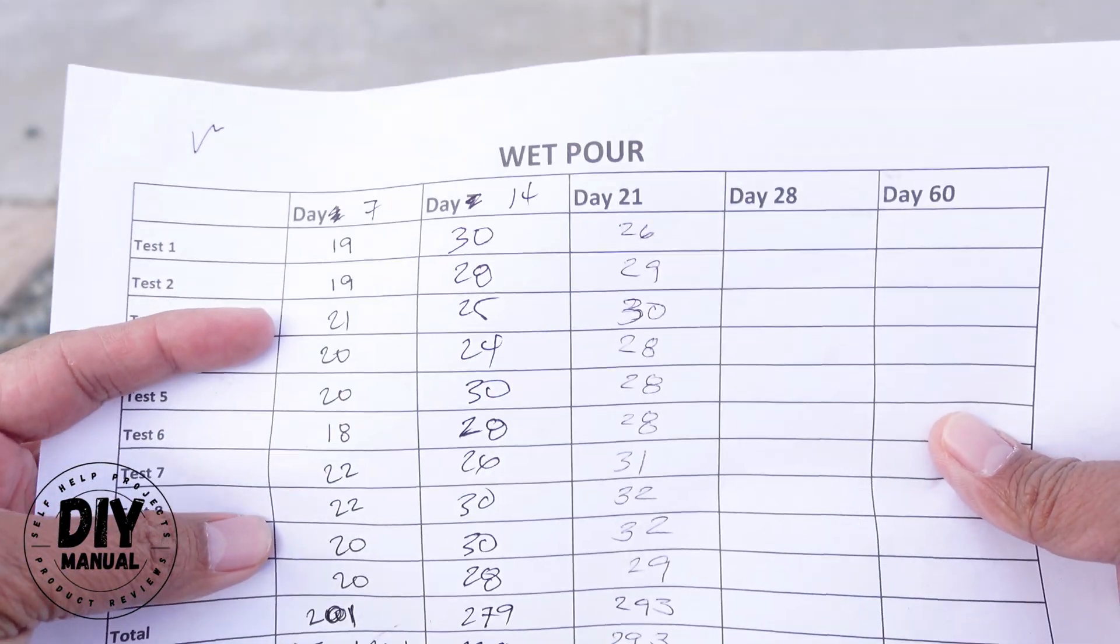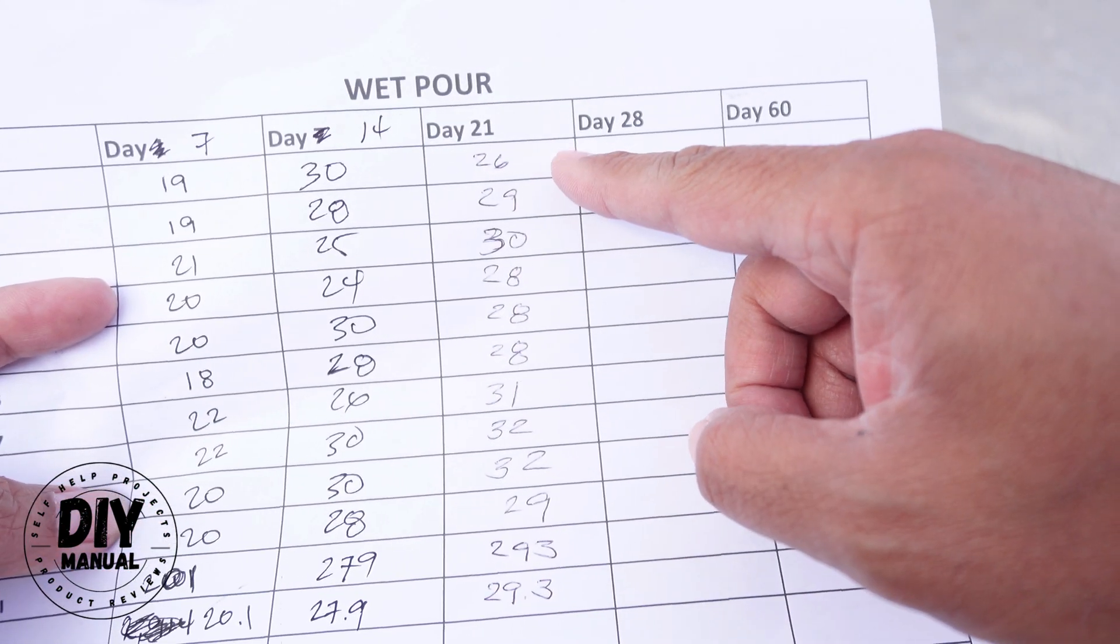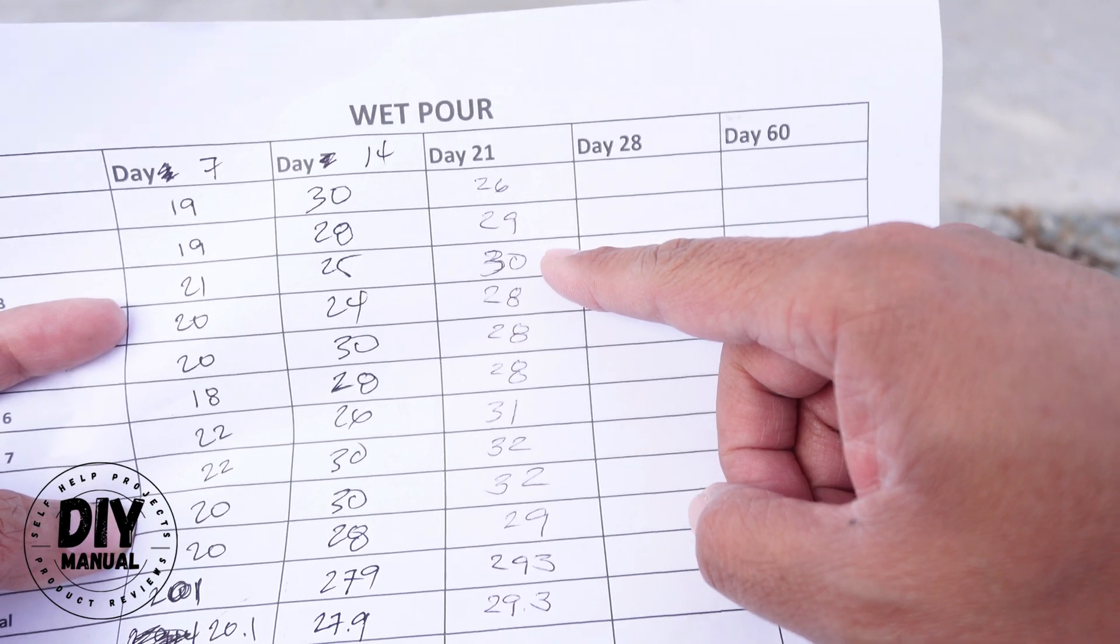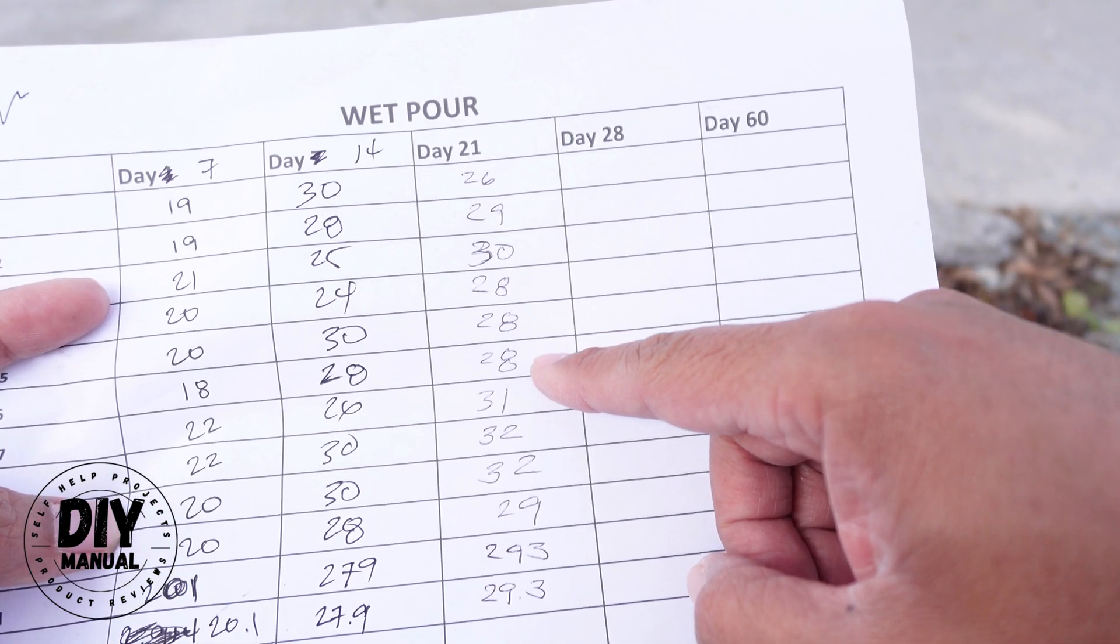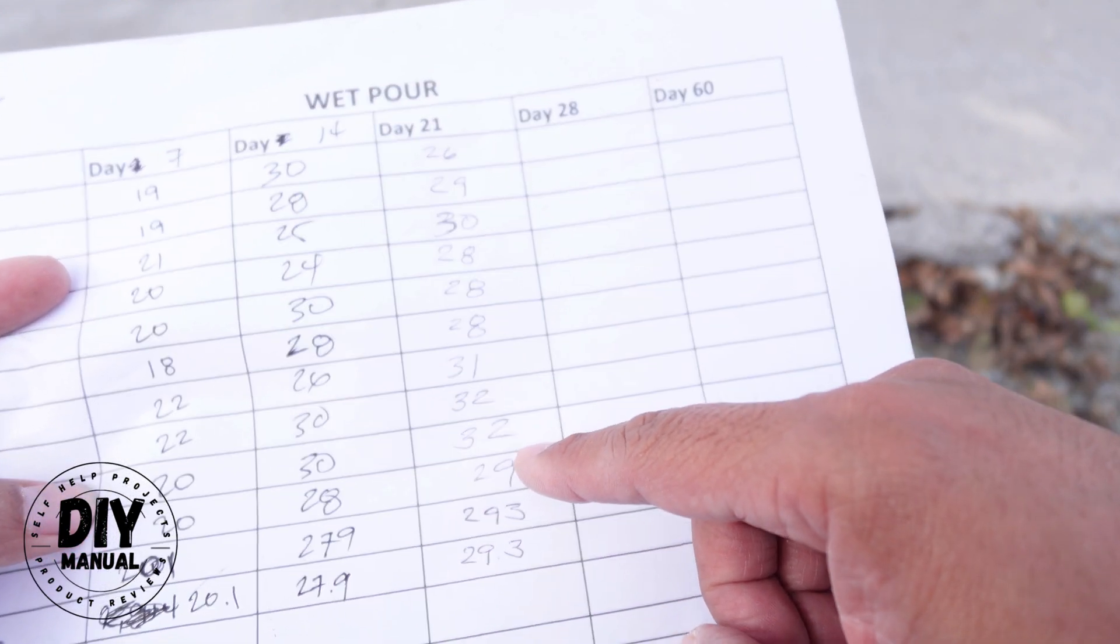So this is the number that we got. So for day 21, test number one, we got a 26, 29, 30, 28, 28, 28, 31, 32, 32, and a 29.